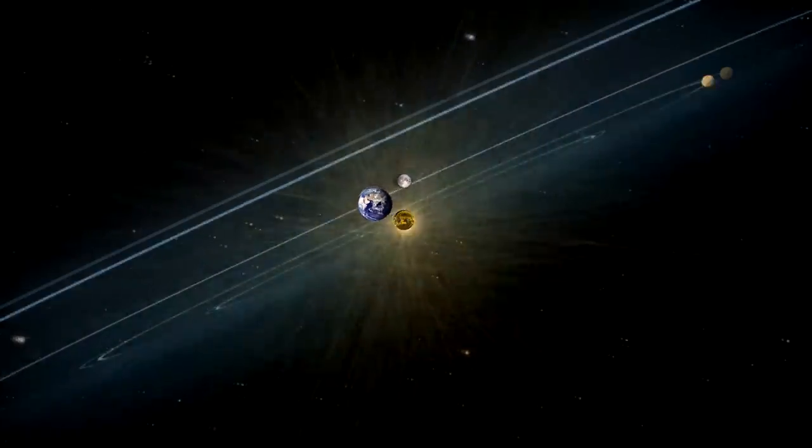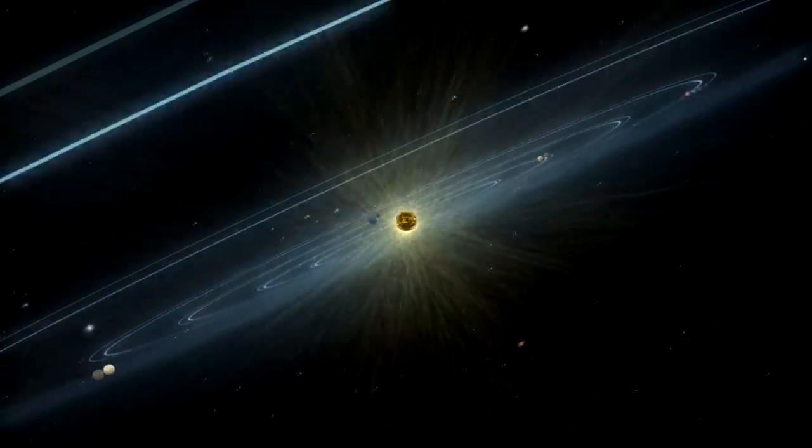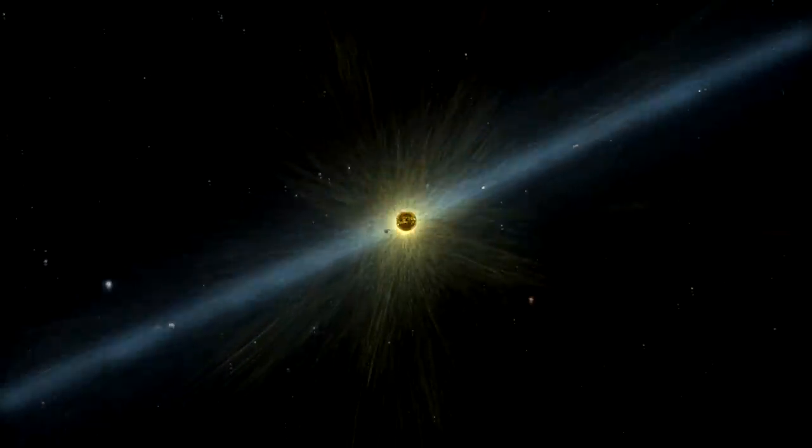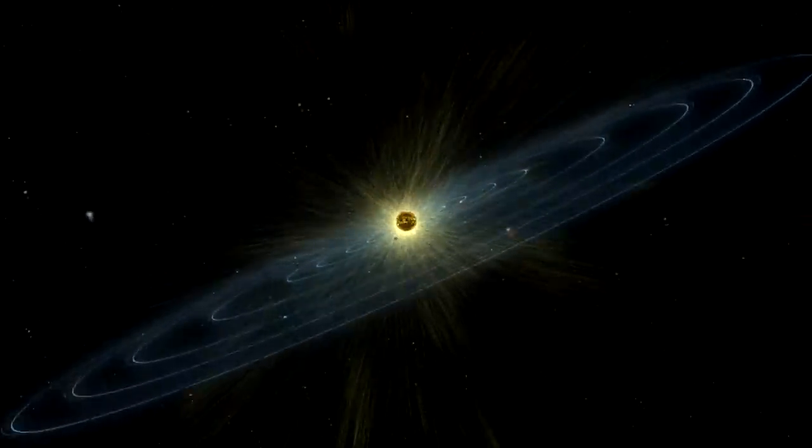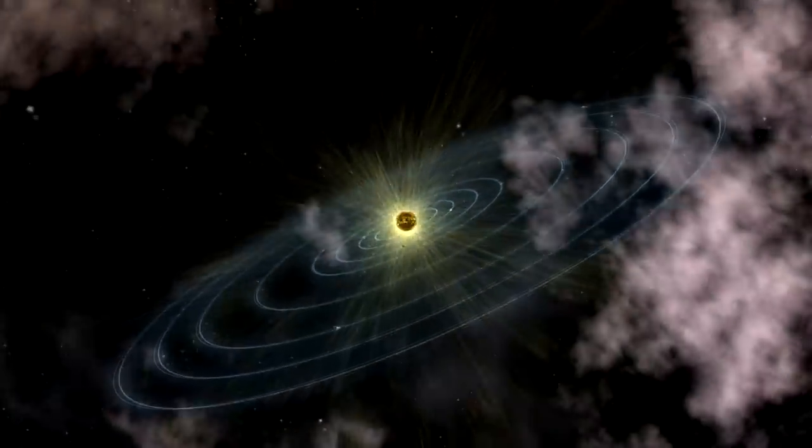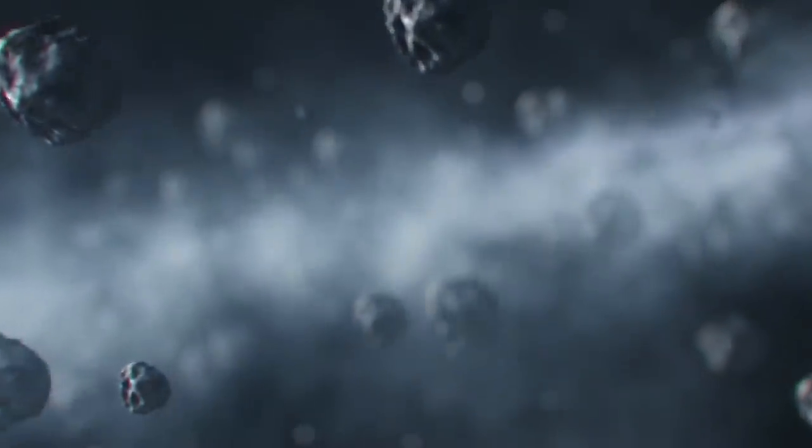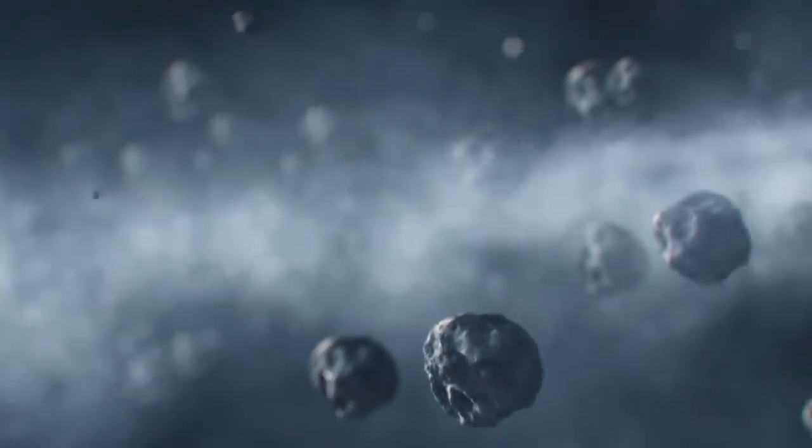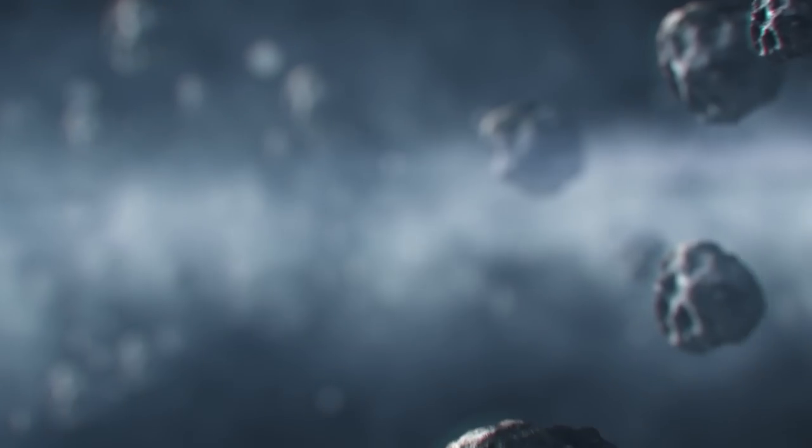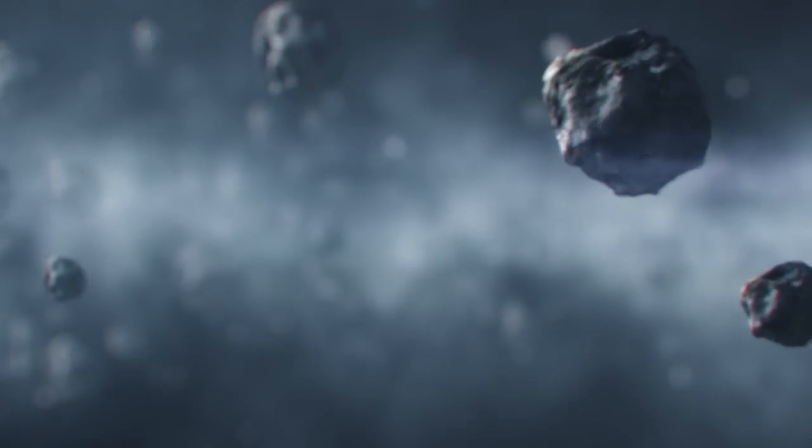The heliopause is the point where the solar wind's outward pressure is no longer strong enough to push into the wind from interstellar space. The heliosphere encompasses the region inside the heliopause, which is shaped like a bubble. You could be thinking that space is a vacuum right now. Spoiler alert, it's not entirely true. The density of matter is incredibly low there, but it's still present.